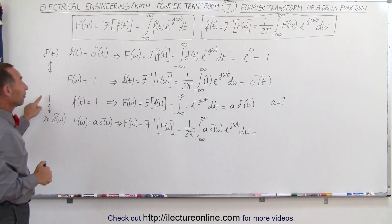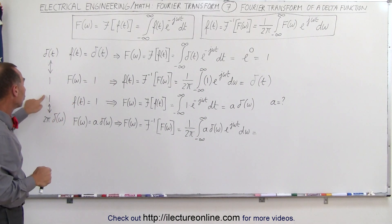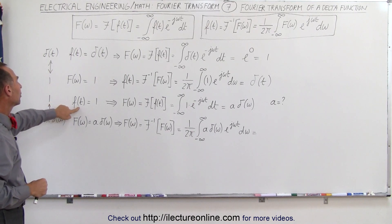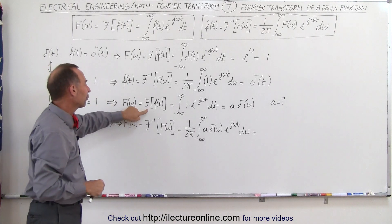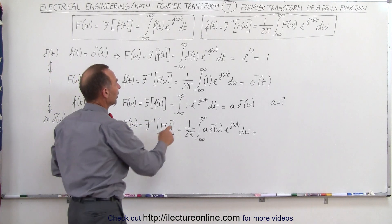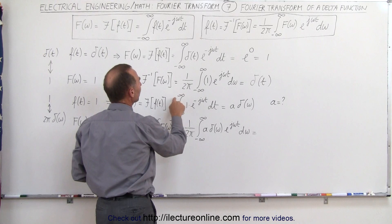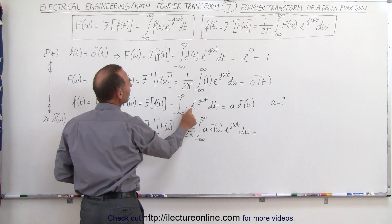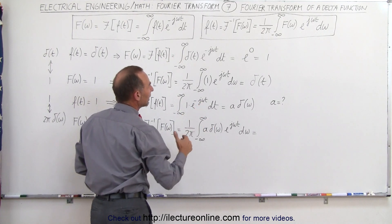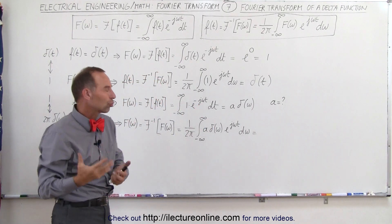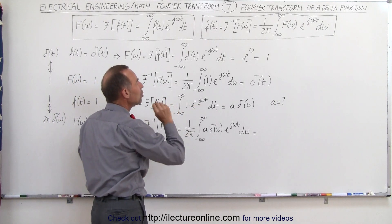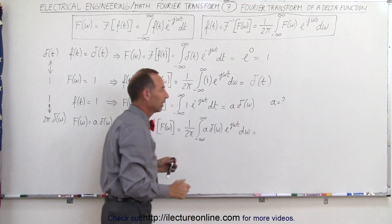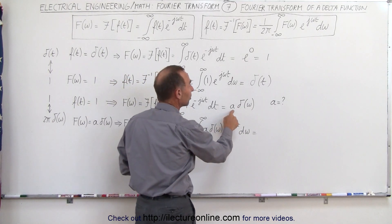Next, we're going to assume that the function in the time domain equals 1, and we're trying to find the Fourier transform of that. We start with the function being equal to 1, plug that into our Fourier transform formula: the integral from negative infinity to infinity of 1 times e to the minus j·ω·t dt. In this case, we're not quite sure how to integrate that directly. However, we know that it's probably going to be some constant times the delta function, and the only thing left to do is figure out what that constant is.